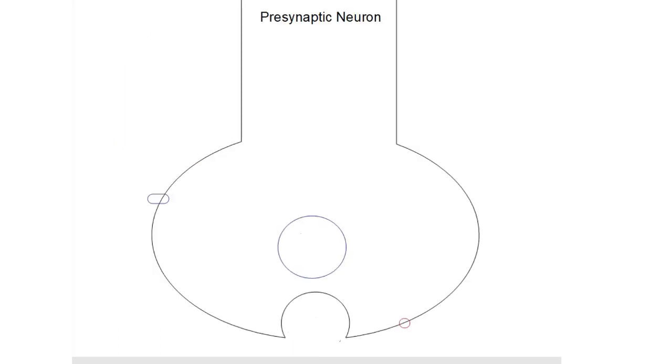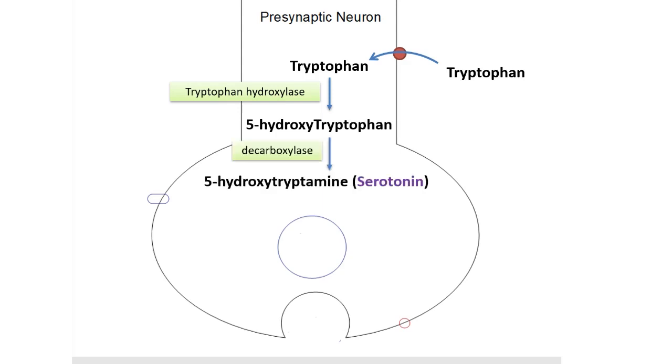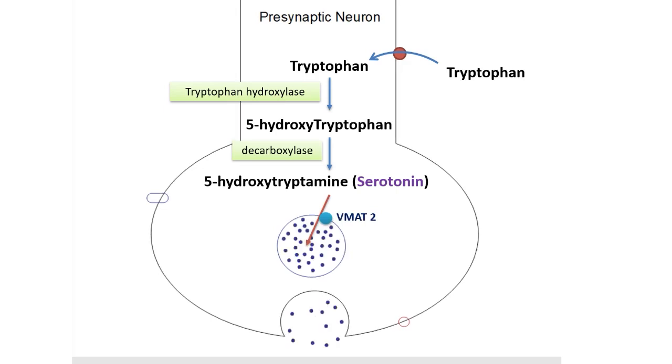Now let us look at the synthesis, storage and release of serotonin. Serotonin is synthesized from the amino acid tryptophan. Tryptophan is converted into 5-hydroxytryptophan by the enzyme tryptophan hydroxylase. This is later converted into 5-hydroxytryptamine or serotonin by decarboxylation. The serotonin thus produced is taken up into the vesicles by vesicular monoamine transporter 2. When the action potential reaches the nerve terminal, serotonin is released into the synaptic cleft and later undergoes reuptake by serotonin transporters.